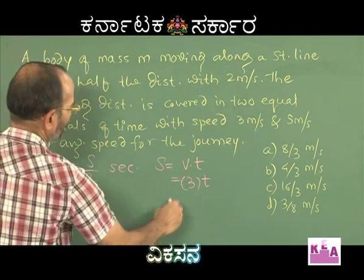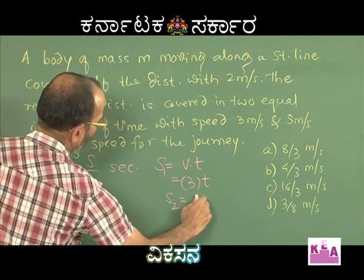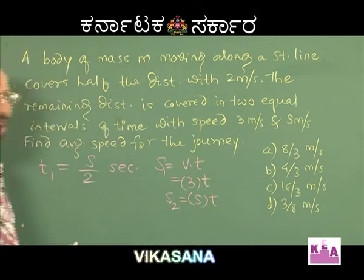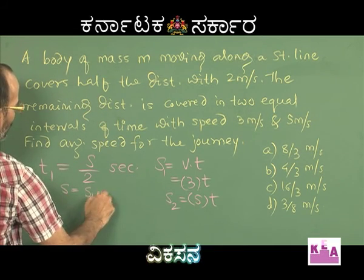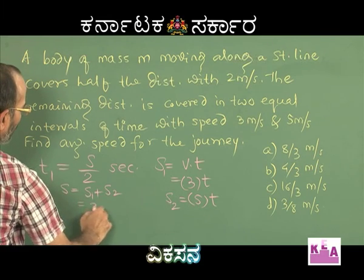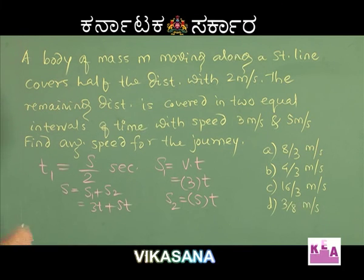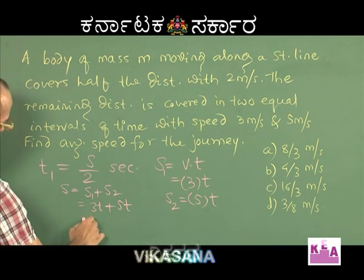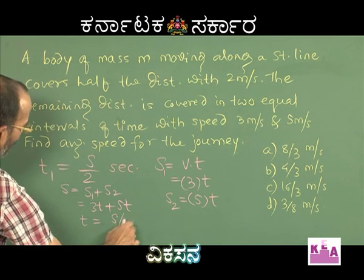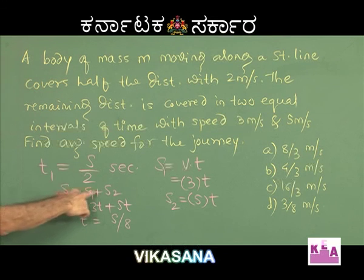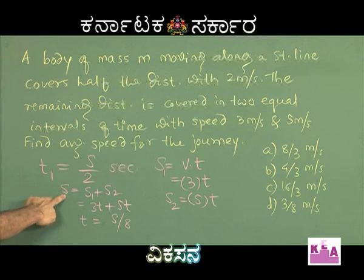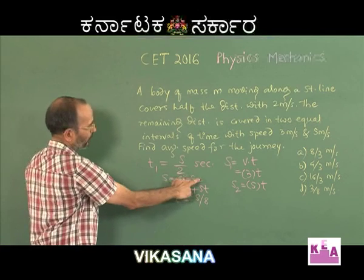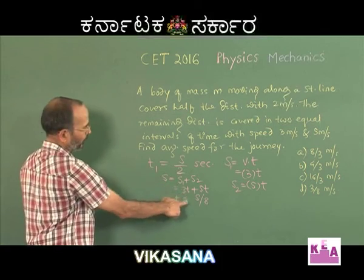During the second equal interval of time the speed is 5 m/s, so the distance covered is 5t. The total distance for the second half is s₁ + s₂ = 3t + 5t = 8t. Therefore t = s/8. We equated s₁ + s₂ to s because the whole journey was divided into 2 equal parts — the first part was s and the second part was also s. So t = s/8, which is one of the equal time intervals for the second half of the journey.